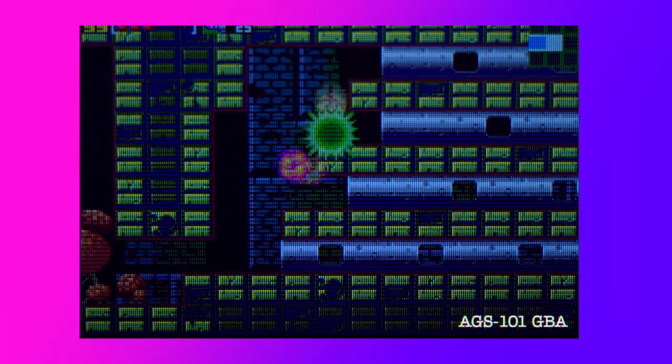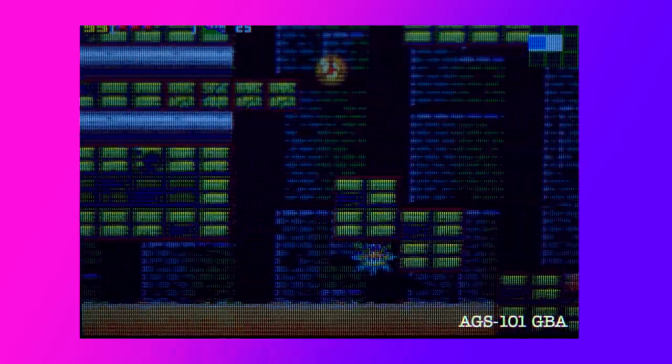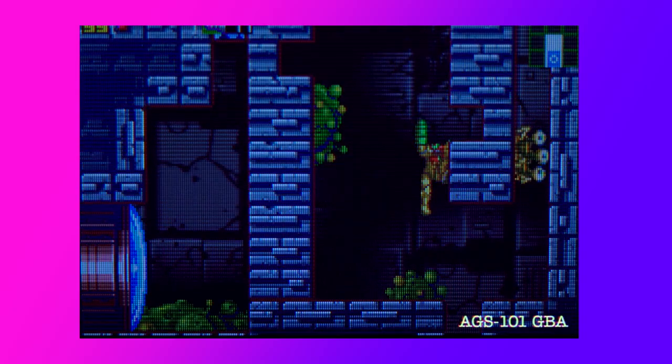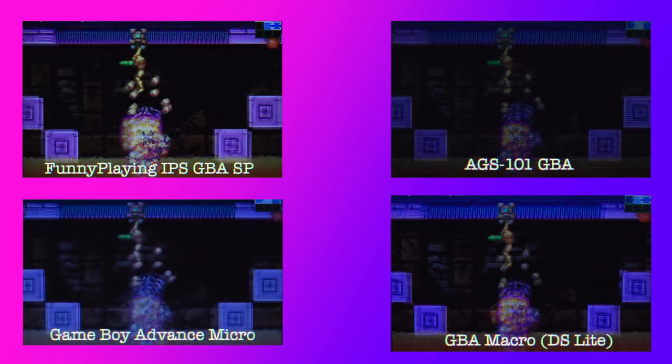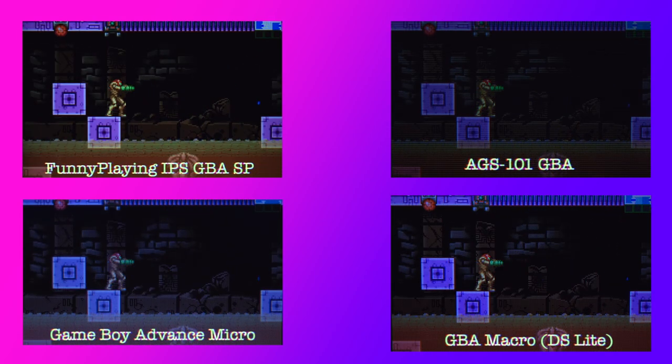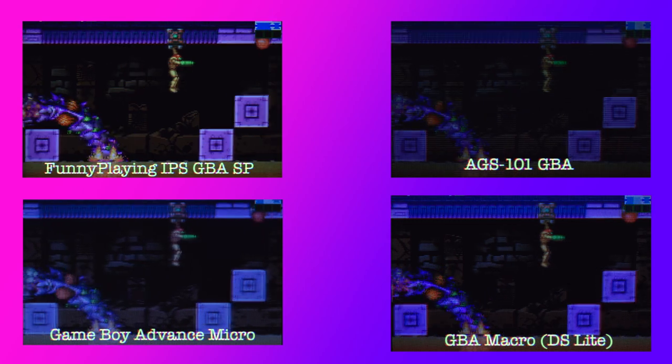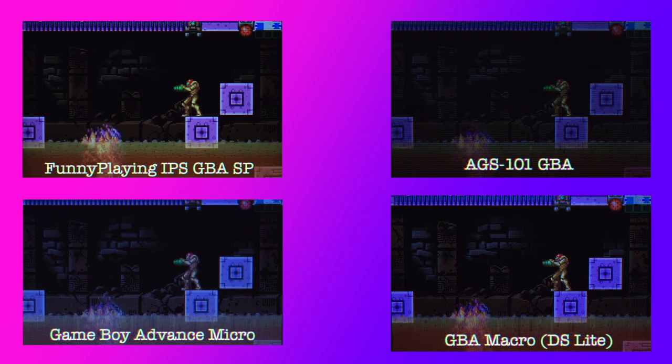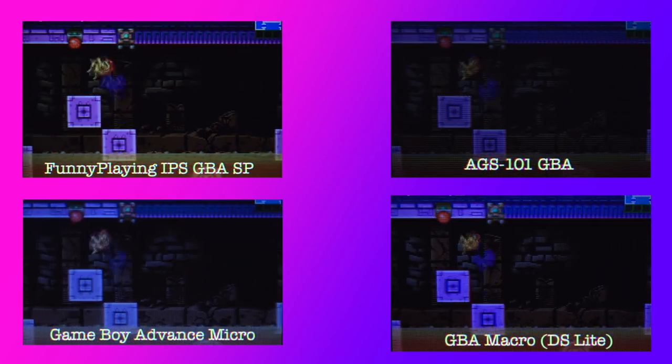Now, the charm of the AGS-101 LCD is the size of the pixels. The pixels are much larger, it's a lower density LCD screen, and really it has more of that retro look. You lose a little bit of that with the IPS screen from Funny Playing. It is a four times integer scale, so basically for every one pixel in the AGS-101, you got four pixels in the IPS kit from Funny Playing.